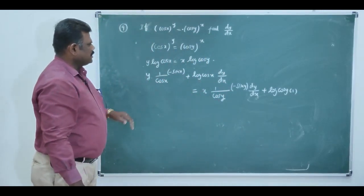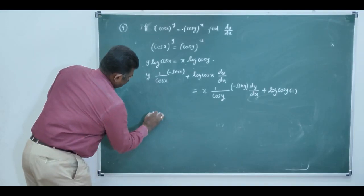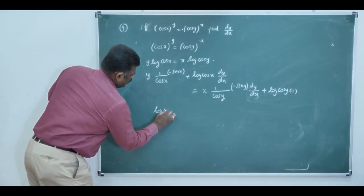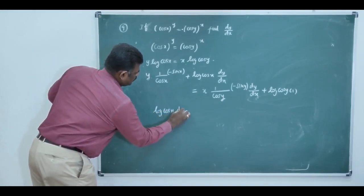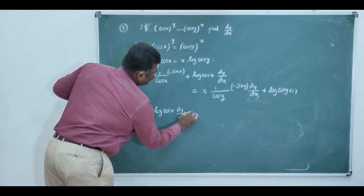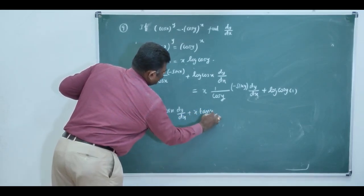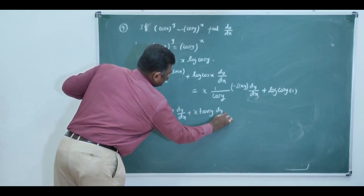We want dy by dx. Arrange all dy by dx to left side. That is, you have log of cos x. Right side, we have the negative value. That is plus x into tan y into dy by dx.